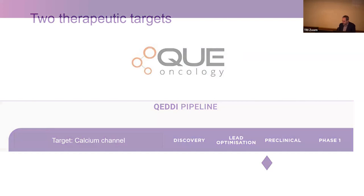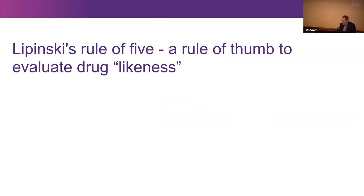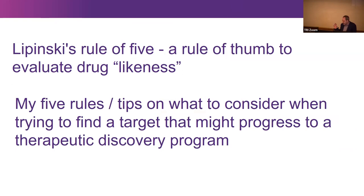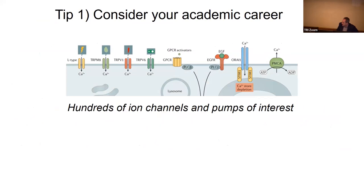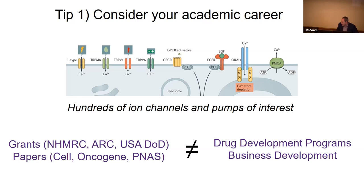In drug discovery there's Lipinski's Rule of Five — what makes a drug look like a drug. I'll frame my talk around five tips on what to consider when trying to find a target that might progress in therapeutic drug discovery. The first tip is to consider your academic career. There are hundreds of ion channels we could study, and in retrospect the ion channels that gave us the most significant grant funding and prolific papers are not the same targets that progressed towards drug development. If you're an early-career researcher, don't put all your eggs in one basket expecting something to become a drug — keep some innovative research on higher-risk areas that might not be commercial at first.